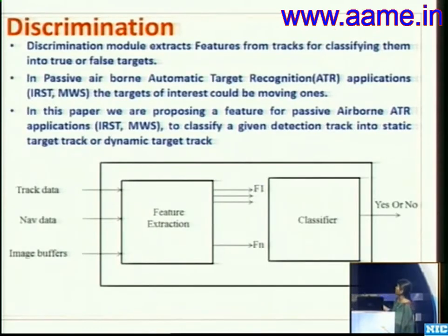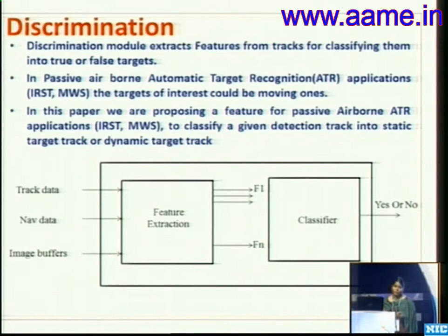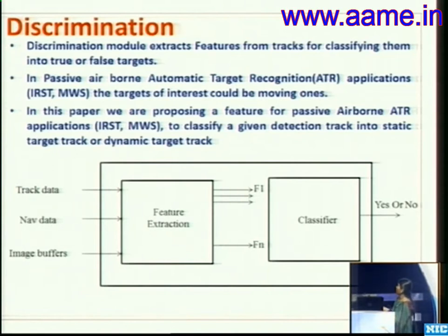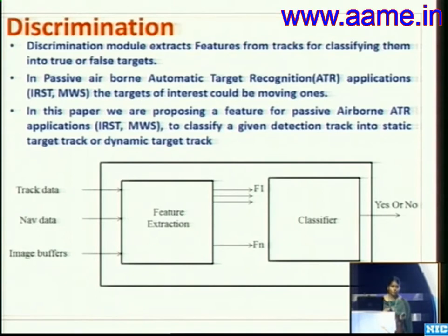In the discrimination phase, track input, navigation data and image buffers are given to the feature extraction phase. The feature set definition is the core of the full system, describing the specific attributes to be determined. For a missile warning system, feature extraction examples include intensity, point target function, image line of sight rate and azimuth rate. The feature extraction estimates everything and passes it to a classifier, which applies weightings to discriminate and classify whether a detection is a true or false target.